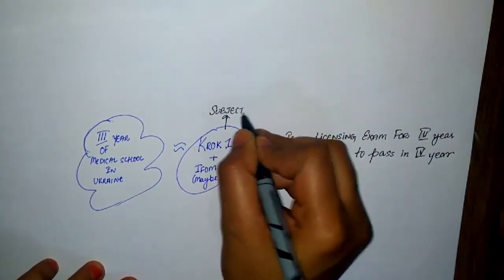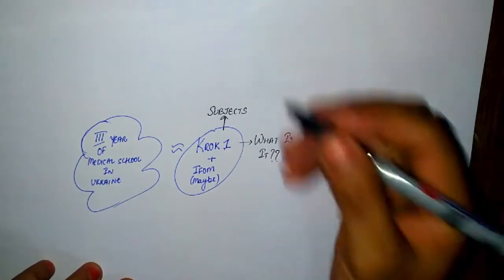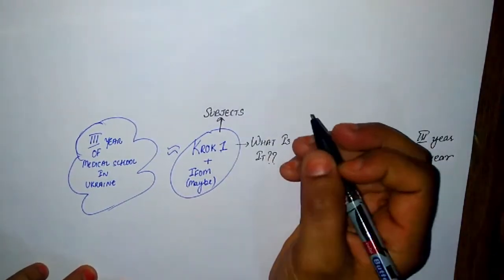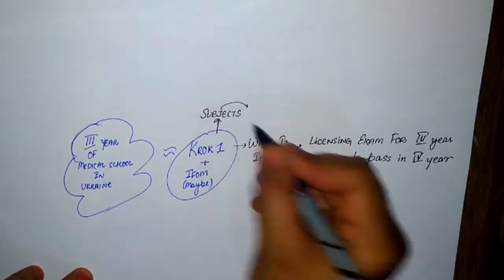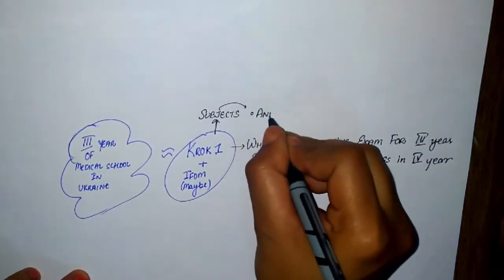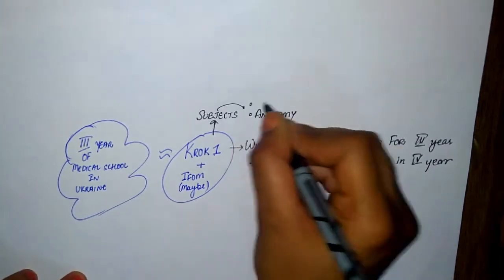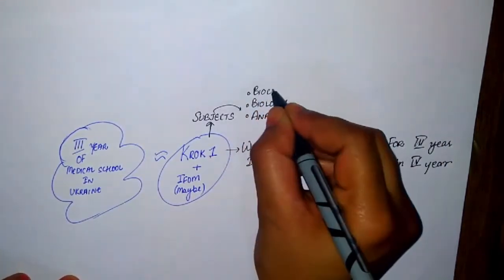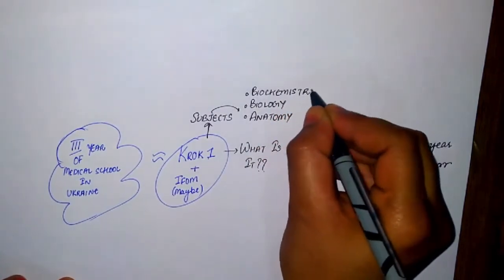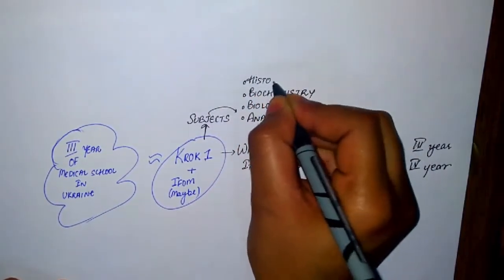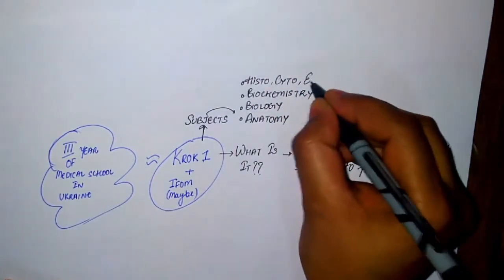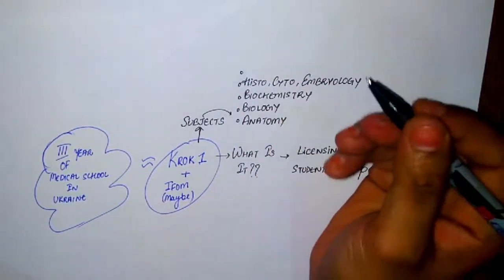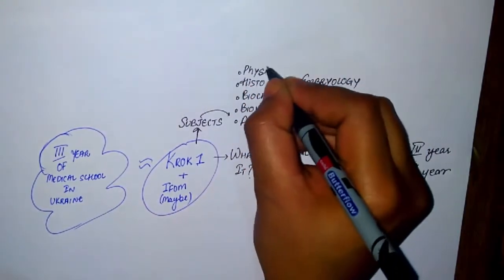CROC 1 is held in three languages: Russian, Ukrainian, and English. Since foreigner students study in English, they give the examination in English. In CROC 1, you are tested on nine preclinical subjects from first, second, and third years.